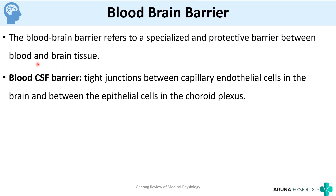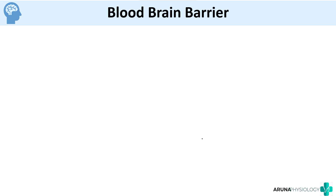Because CSF is a part of the brain itself, the blood-CSF barrier can also be considered as a blood-brain barrier. So not only the barrier between blood and brain parenchyma, but the barrier between blood and CSF can also be considered as a blood-brain barrier. The blood-CSF barrier is basically the tight junction between the capillary endothelial cells in the brain and the epithelial cells of the choroid plexus, which produces CSF.